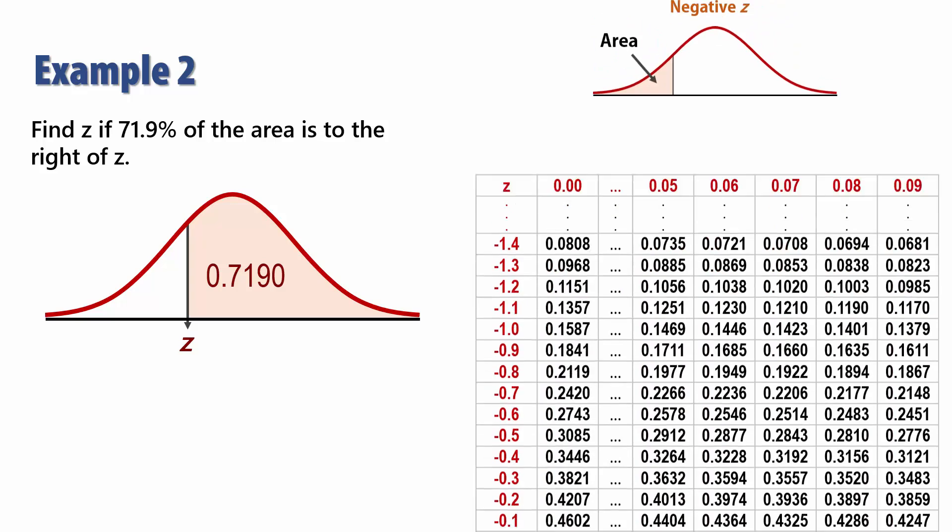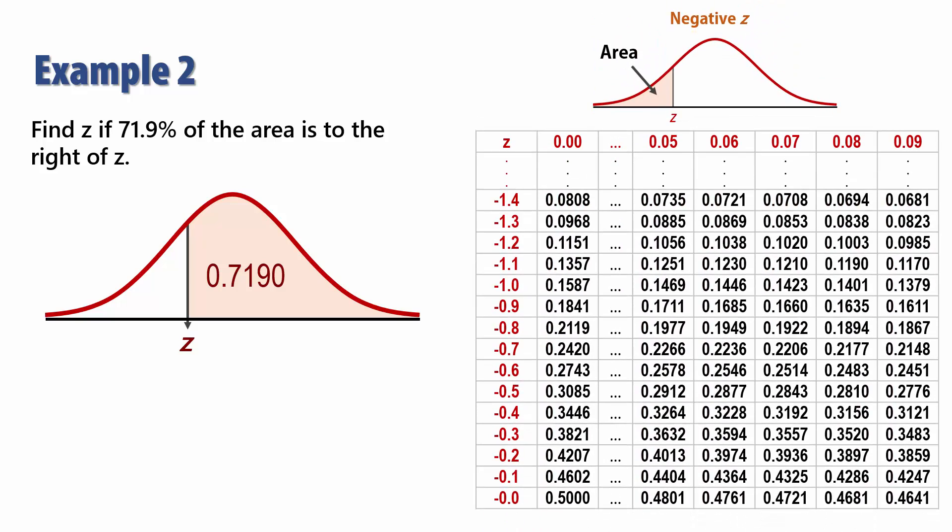So we go to the negative section of the table. Since the areas in the tables are less than areas, we need to find a less than area corresponding to Z here. That is 1 minus 0.7190, which gives 0.2810.